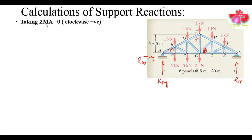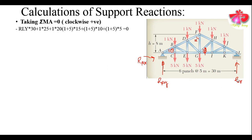Here we will take the summation of moments at point A equals to zero. We assume that clockwise moment is positive — though you can take anticlockwise as positive as well. Taking ΣM_A = 0 with clockwise as positive: R_LY gives an anticlockwise moment at point A, so it will be negative. The 1 kN load at 25 m distance gives a clockwise moment, and similarly for the other loads. Solving this, we get R_LY = 7.5 kN.